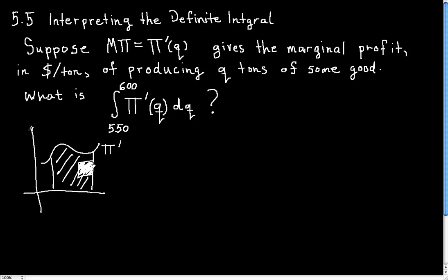So these vertical units right here are in dollars per ton. And since q is on the horizontal axis, the horizontal units of this are in tons.